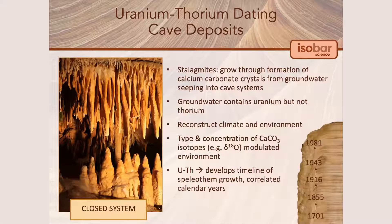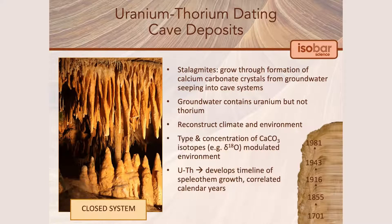Stalagmites grow because of the formation of calcium carbonate crystals. As water percolates into a cave, it leaves behind deposits of calcium carbonate. These crystals build up over time to form stalactites and stalagmites, or speleothems.